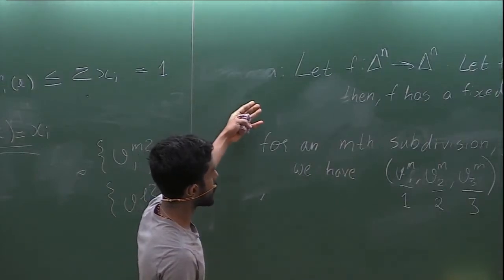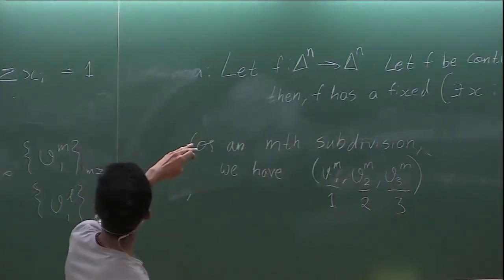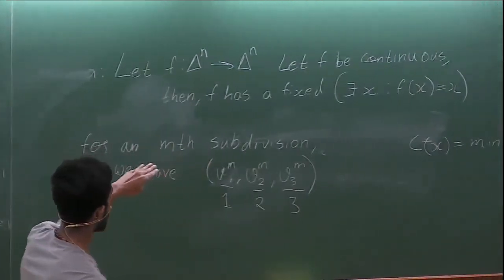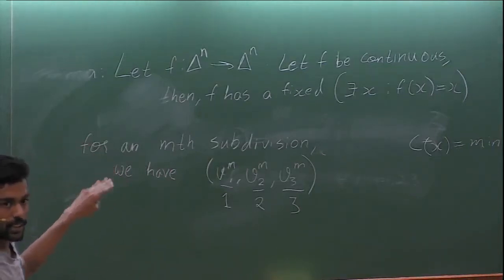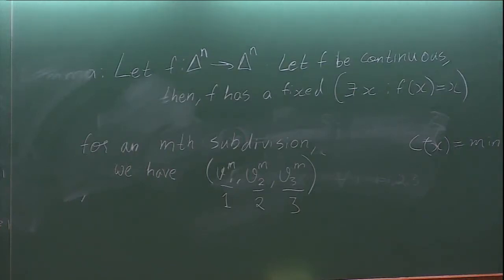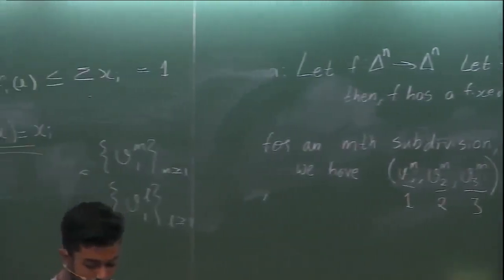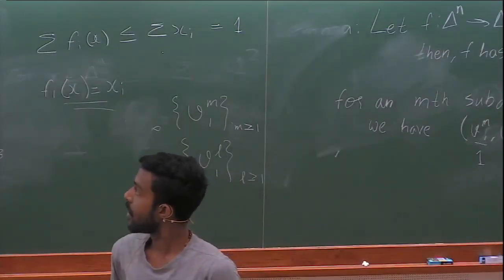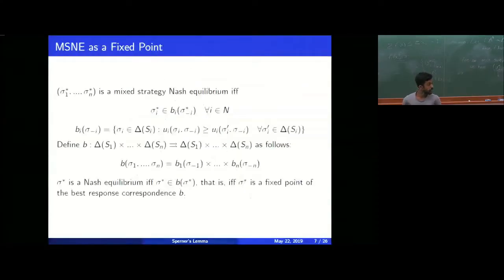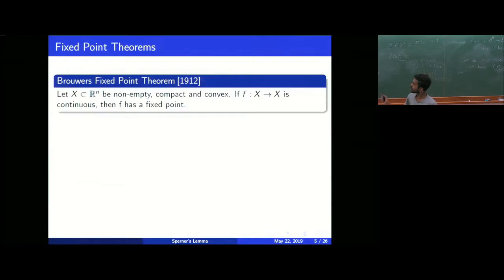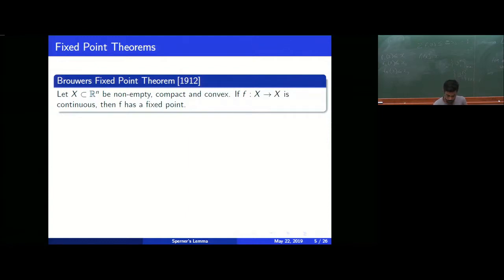Now that we have this lemma, we want to generalize from simplices to general compact convex sets. Brouwer's fixed point theorem states: for any non-empty compact and convex set, if the function f mapping it to itself is continuous, then f has a fixed point. We have proved this for N-dimensional simplices, and we want to extend this to general compact convex sets.